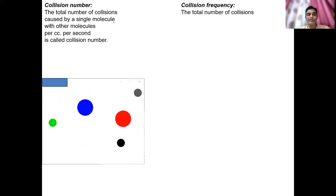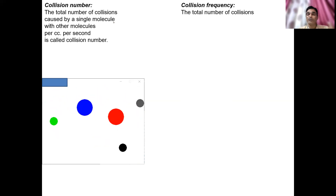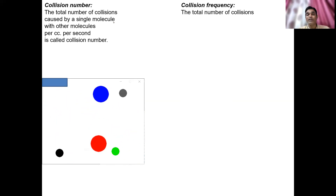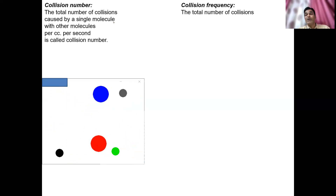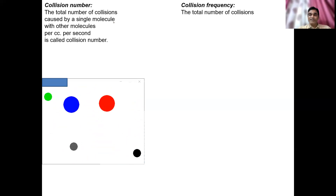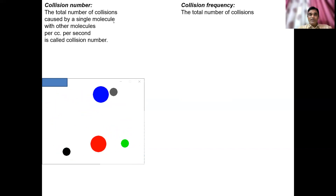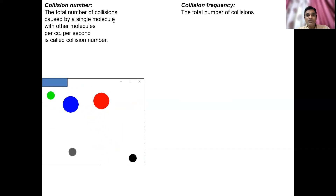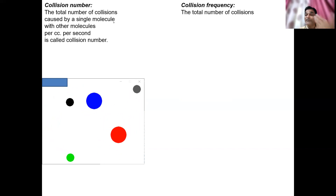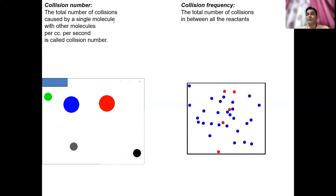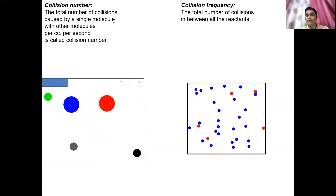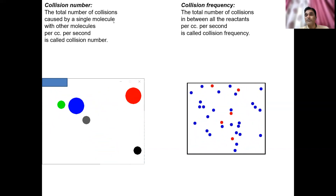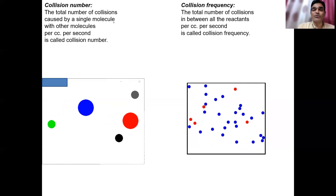For collision number, you focus on one chosen particle — say a blue molecule — and count how many collisions it makes with other molecules in one second in a volume of one cm³. That is the collision number. For collision frequency: it is the total number of collisions between all particles in one cm³ volume per second. That is called collision frequency.